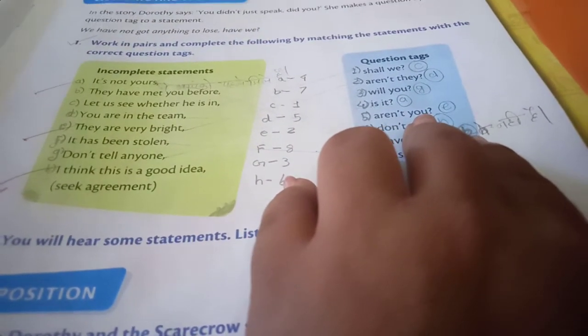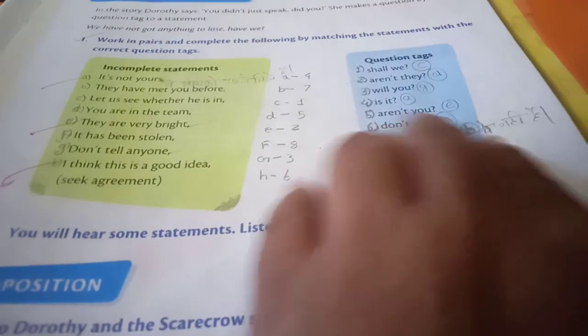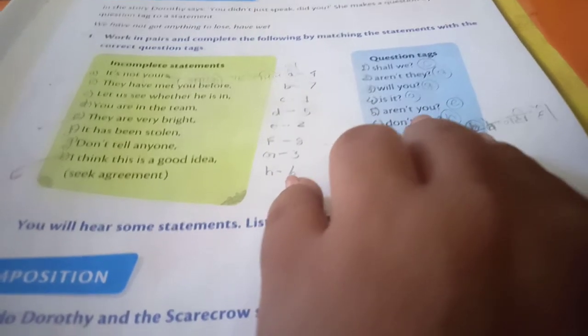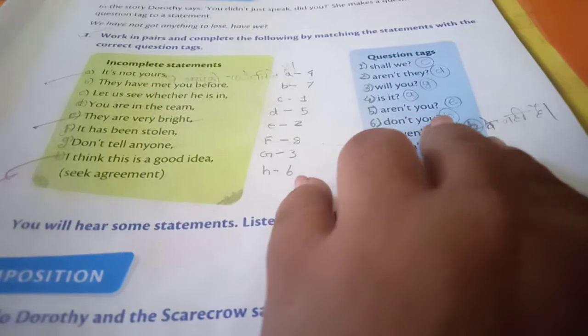That is aren't you? Aren't you? Are not you? 'Aren't' is the short form of 'are not.' Aren't you? Yes, you are in the team.